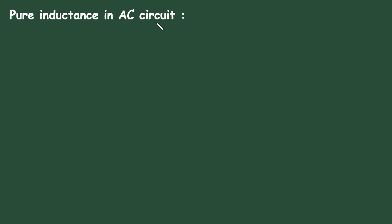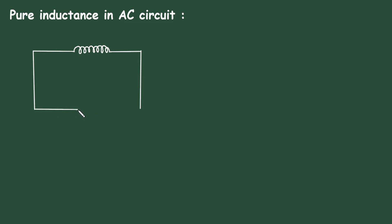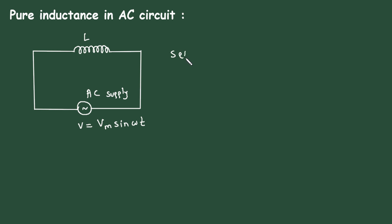Pure inductance in AC circuit. Let's draw an inductor connected to AC supply. This is AC supply with voltage V equal to Vm sin(ωt). This is the inductor with inductance L. The self-induced EMF across the inductor will be E equal to minus L di/dt.